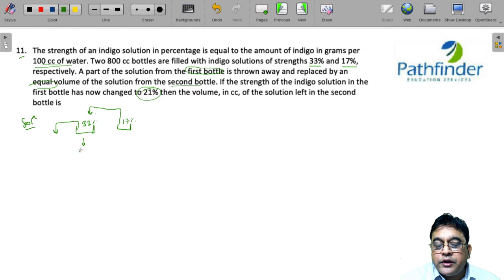It is clearly a simple allegation question where you have two mixtures: one with the strength of 33% is mixed with another solution of indigo with 17%.